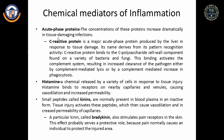Mediators of inflammation include acute phase proteins. C-reactive protein is a major acute phase protein; when tissue is damaged, the liver secretes it. It is named C-reactive because it binds to the C-polysaccharide cell wall component found on bacteria and fungi. This binding activates the complement system, clearing the pathogen either by complement-mediated lysis or complement-mediated increase in phagocytosis.